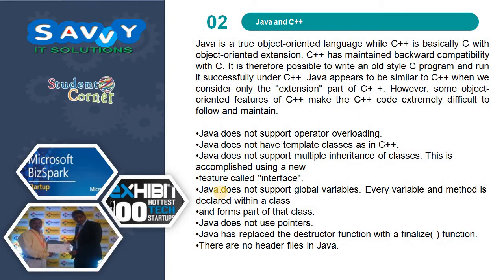Now we need to know the difference between Java and C++. Java is a true object-oriented language while C++ is basically C with object-oriented extensions. C++ has maintained backward compatibility with C. It is therefore possible to write an old-style C program and run it successfully under C++. Java appears to be similar to C++ when we consider only the extension part of C++. However, some object-oriented features of C++ make the C++ code extremely difficult to follow and maintain.